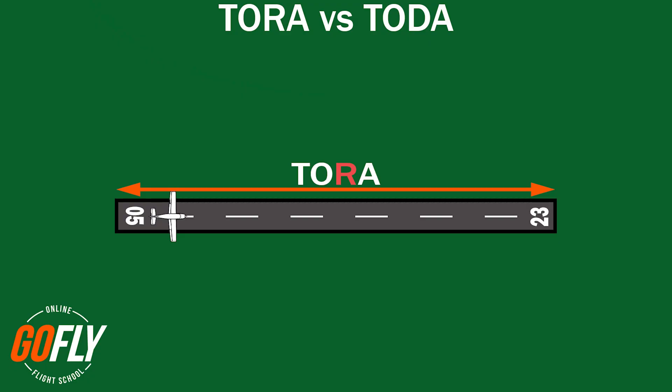Take-off run available, or TORA for short, is the ground run available for an aircraft to take off. At most airports, it is the physical length of the runway. Take-off distance available, or TODA for short, is the distance available before the aircraft must be at least 50 foot over an obstacle. For a runway with no clearway, this means that the take-off distance available is the same as the take-off run available.